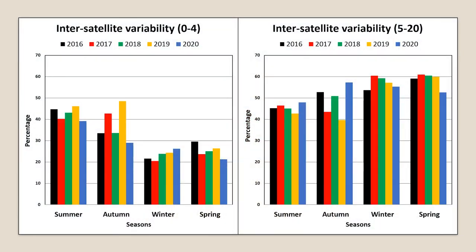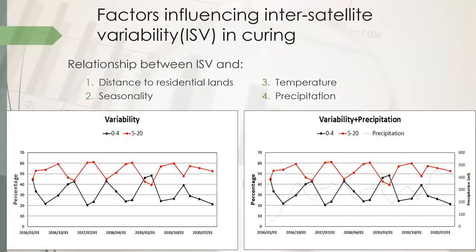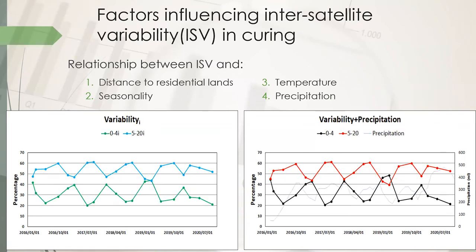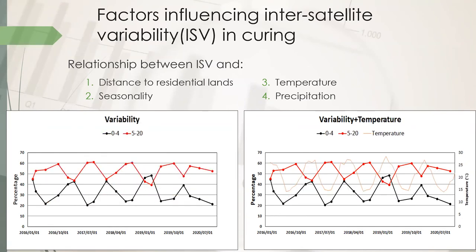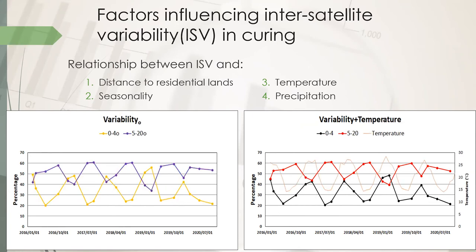In order to further test and verify the results, I used Landsat-8 and MODIS images from the past 5 years to calculate the inter-satellite variability. In general, there is more high ISV than low ISV, especially during winter and spring. These graphs show the relationship between inter-satellite variability and distance to residential lands, seasonality, temperature, and precipitation.